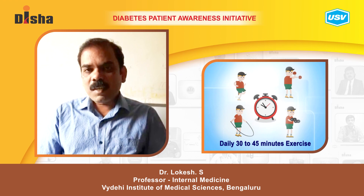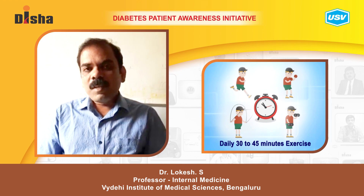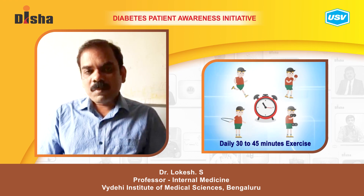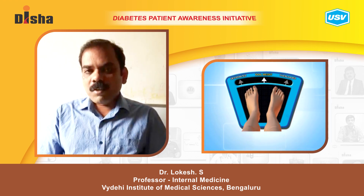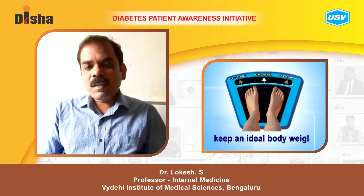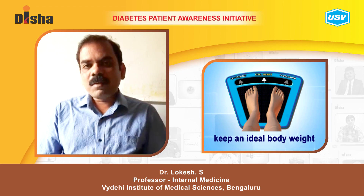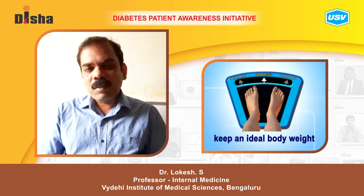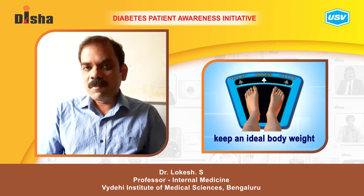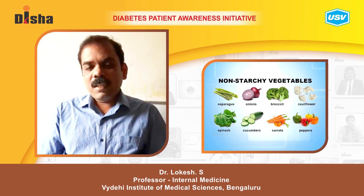Being active is the first modality. The second one is: if you are overweight, reduce your weight. Even a 5 to 6 percent weight reduction reduces the development of diabetes by 58%.